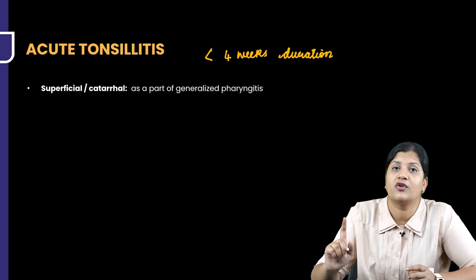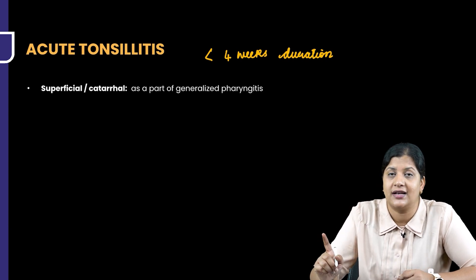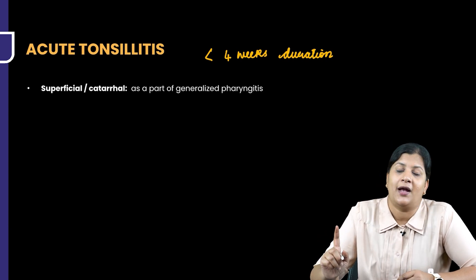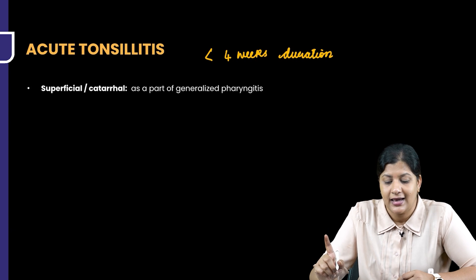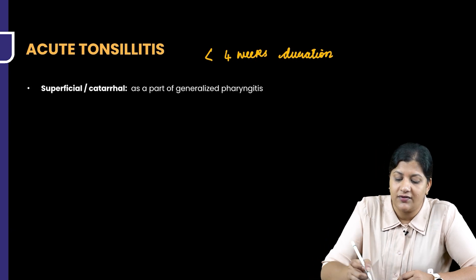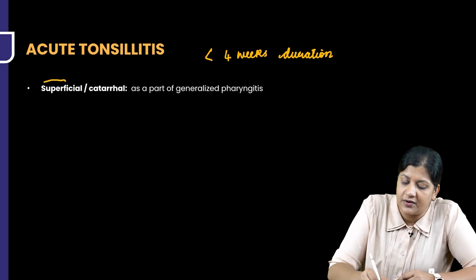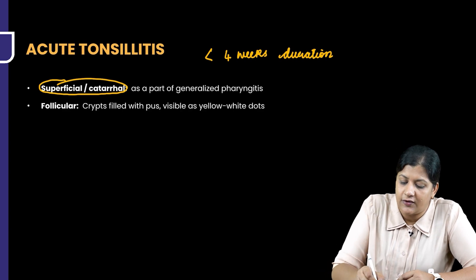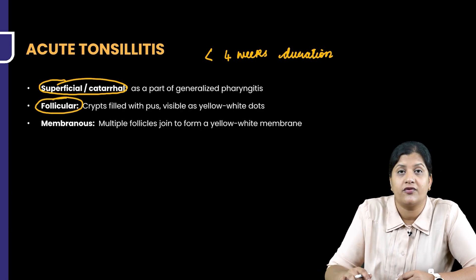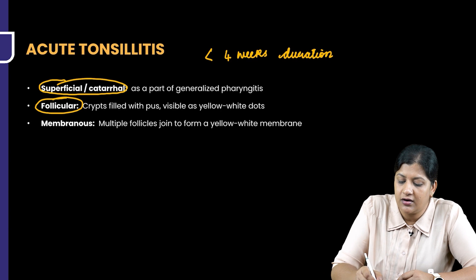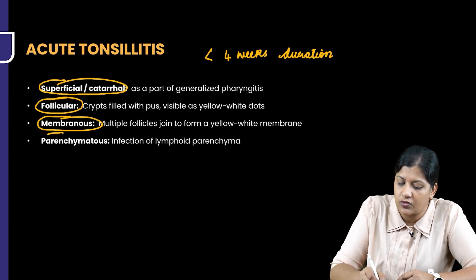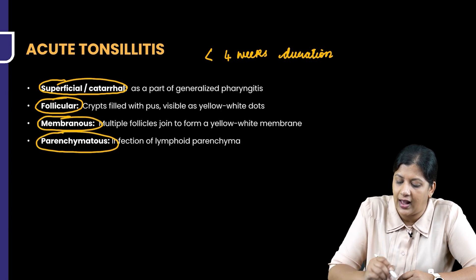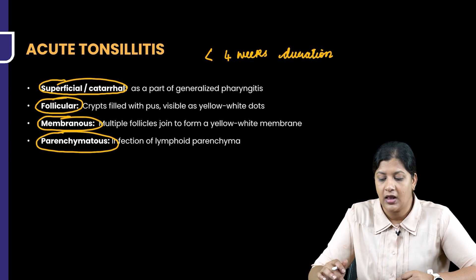There are four forms of acute tonsillitis in the pathophysiology of the disease. The first one is called the superficial form, also called the catarrhal form. The second is called the follicular form, the third is the membranous form, and the fourth is the parenchymatous form.